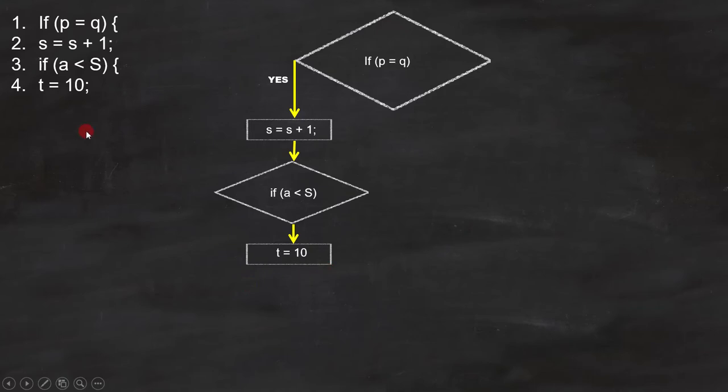Now pay attention to line number 6, it is very important. Here we have a closing bracket, a condition, and an opening bracket. The closing bracket is for the condition in line number 1. What it means is, if condition 1 is true, all the lines within it will be executed.